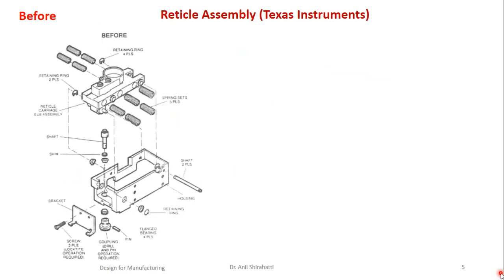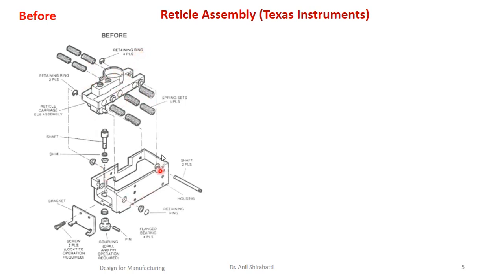Let's see the first example — this is a ratchet assembly from Texas Instruments. In the first design, there are almost more than 45 parts: a shaft, a retaining ring, a cup coupling, a few screws, brackets, a main base plate, an upper sub-assembly which consists of nine spring sets, and the retailer springs. There are so many parts, and this will definitely take more time to assemble.